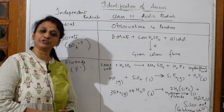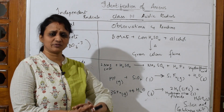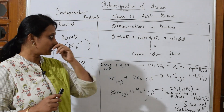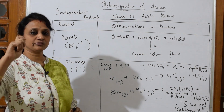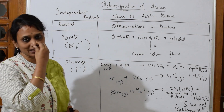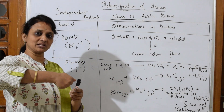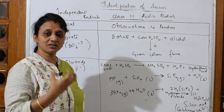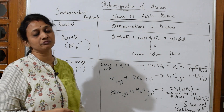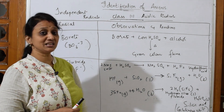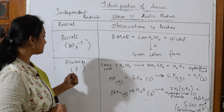Now let's finish the last two independent radicals — borate and fluoride. To test for borate: take the salt given, add concentrated sulfuric acid, then add alcohol — which is a combination of ethanol and methanol as denatured alcohol. Hold the test tube in a slanting way on the Bunsen burner. Immediately the whole thing catches a green color flame. The green color flame confirms the presence of borate in the given salt — it's a very nice, beautiful color flame.